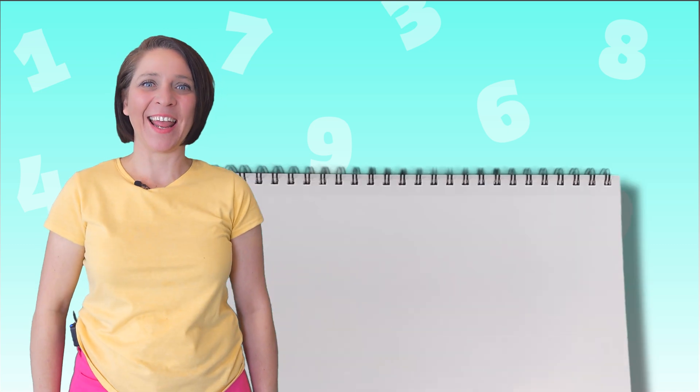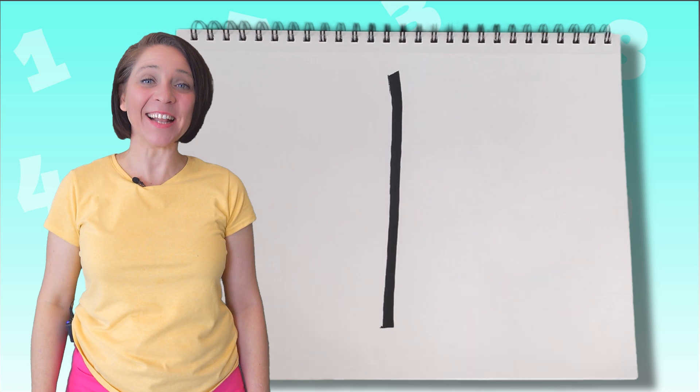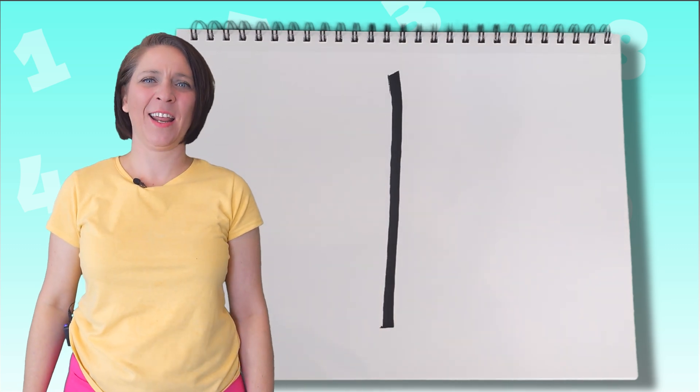Number one. Make a line and now you're done. That's the way to make a one. Count to one. One. That was easy.